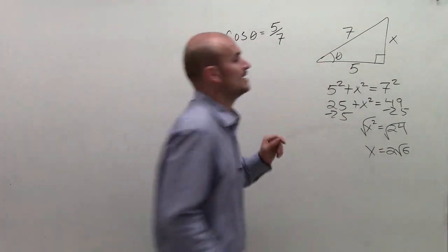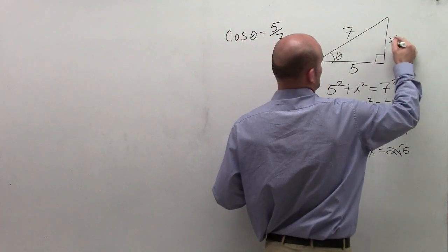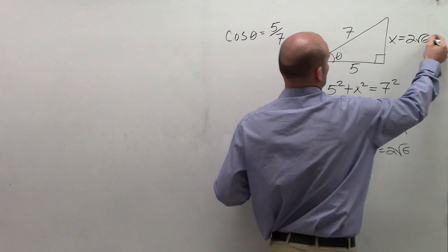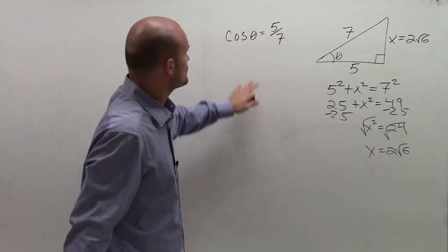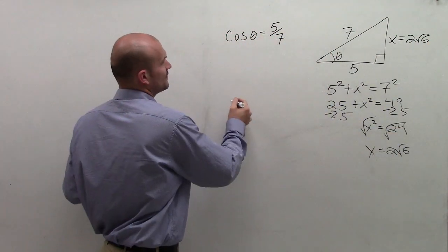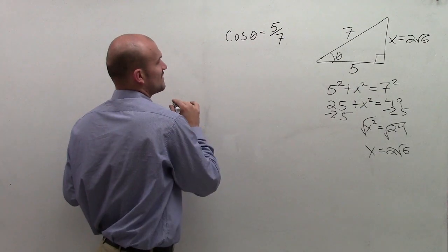So therefore, my opposite side is now going to be, actually, I'll write that in, 2 radical 6. So therefore, from there, I can now figure out the rest of them.